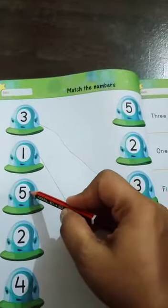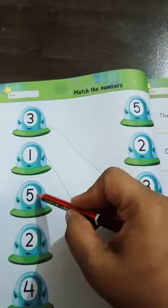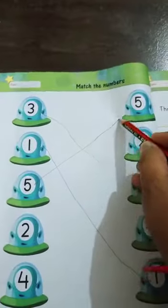Now this is number 5. This is number 5. Draw a slanting line.